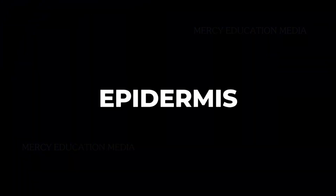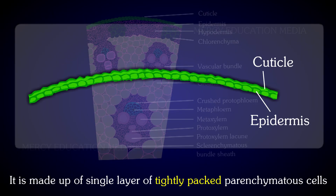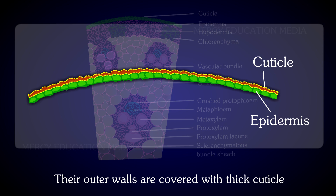How is the structure of epidermis? It is the outermost layer of the stem. It is made up of a single layer of tightly packed parenchymatous cells, and their outer walls are covered with a thick cuticle.